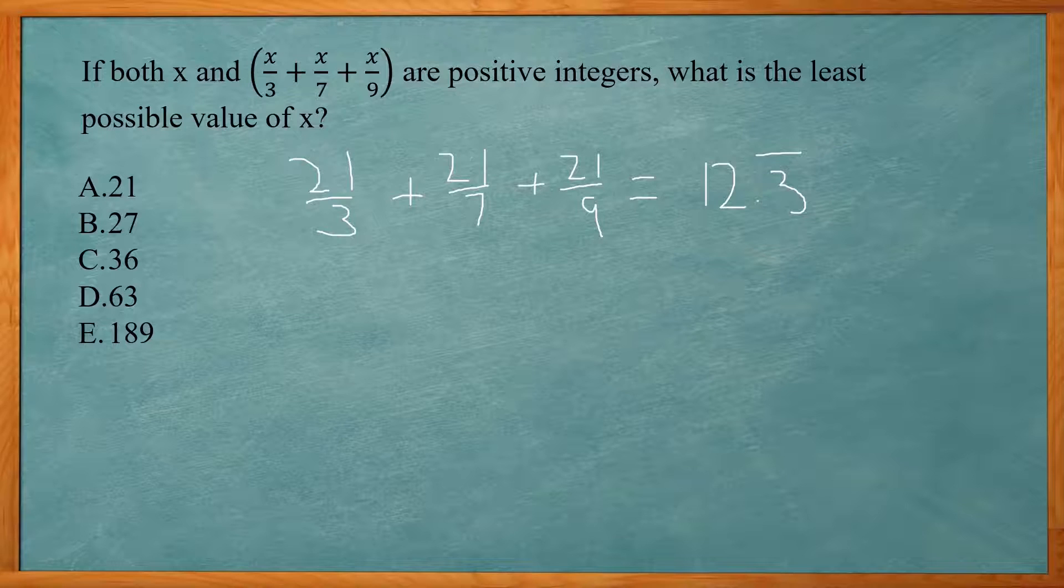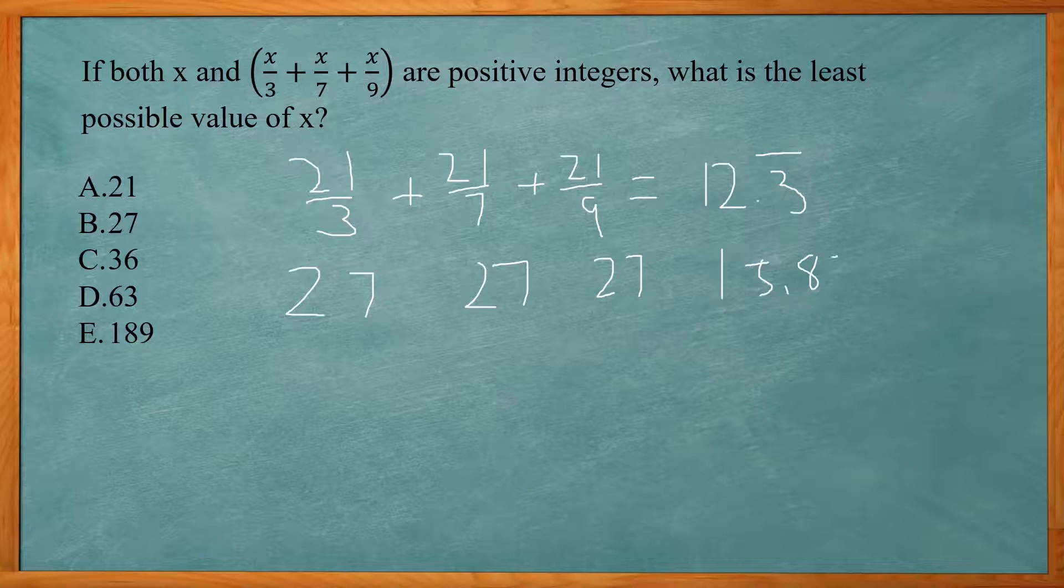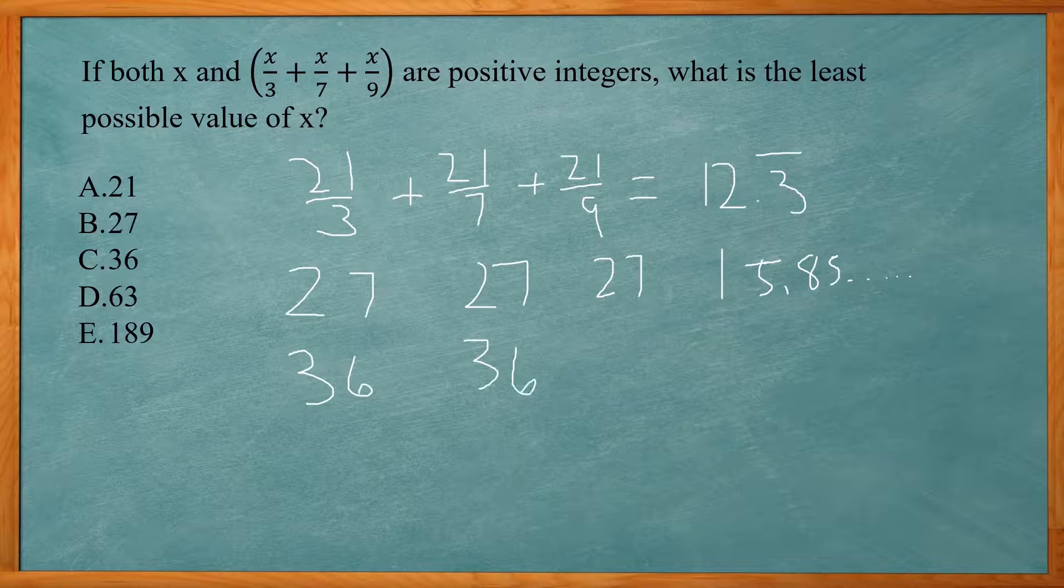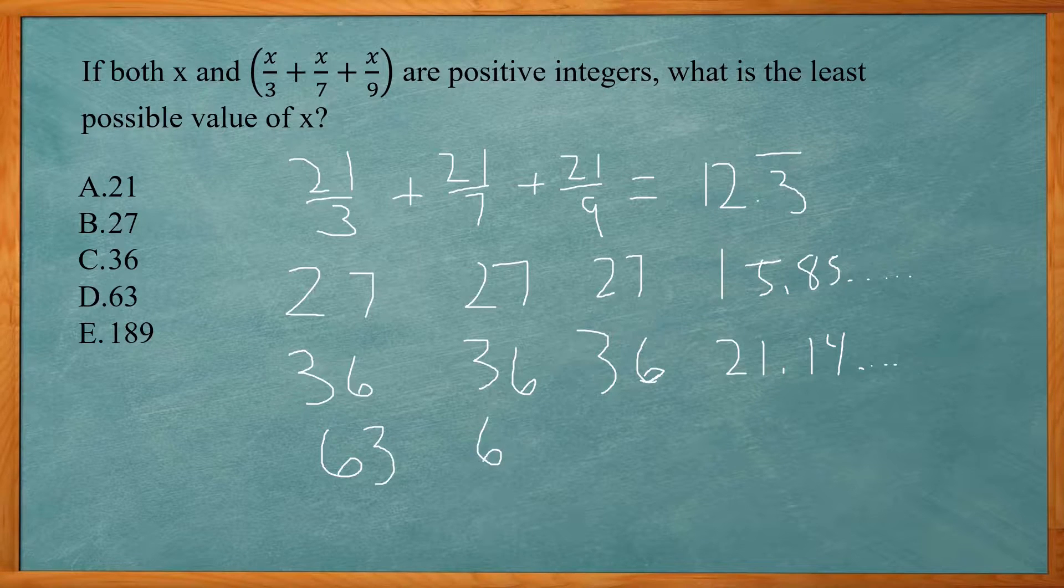So on your calculator you can do second enter and you get this again. So change the 21s to 27. Once you do that, you get an answer of 15.85 and some remaining decimals. So that's not an integer. You can go back in, second enter, replace the 27s with 36. And you'll get 21.14 and some more decimals. So that's not an integer. So keep going, I'm going to try 63. So replace the 36 with 63.